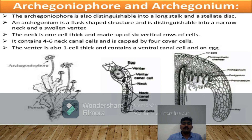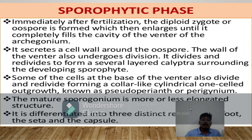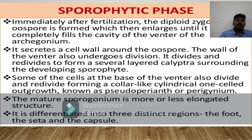Coming to the sporophytic phase: immediately after fertilization, the antherozoid released from the anthridium and the egg released from the archegonium undergo fertilization. After fertilization, the diploid zygote or oospore enlarges until it completely fills the cavity of the archegonium. It secretes a cell wall around the oospore. The wall of the venter also undergoes division and re-divides to form a several-layered calyptra surrounding the sporophyte.